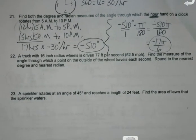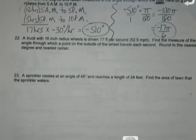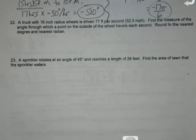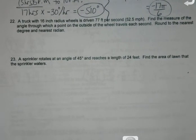Now I'm going to go past 22 for right now, because I want to keep life simple today. Problem 23: A sprinkler rotates at an angle of 45 degrees and reaches a length of 24 feet. Find the area of lawn that the sprinkler waters.